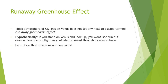Venus is sufficiently strongly heated by the sun that water vapour can rise much higher in the atmosphere and be split into hydrogen and oxygen by ultraviolet rays coming from the sun. The hydrogen can then escape from the atmosphere, while the oxygen recombines and bonds to metals like iron on the planet's surface.